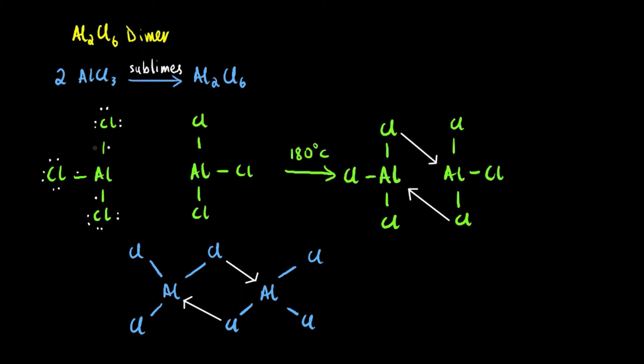We know that aluminum has three valence electrons, which will be denoted by crosses, and the same for this aluminum chloride molecule. Now, we will see how a dative bond is formed in this compound.